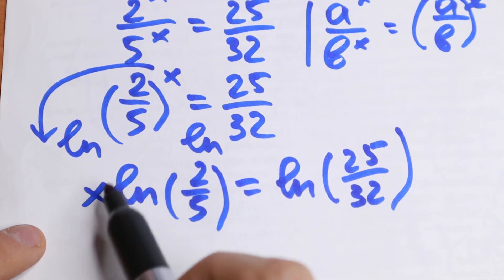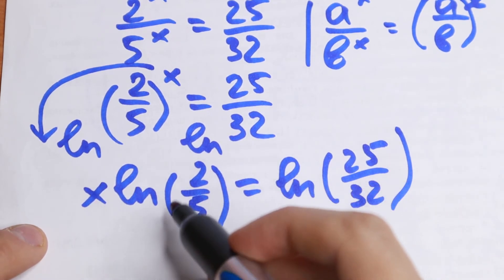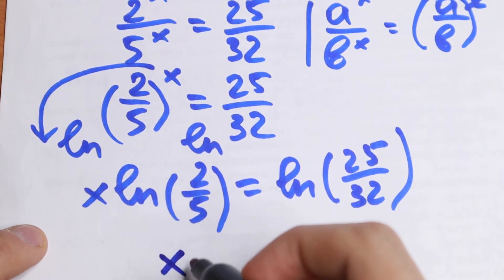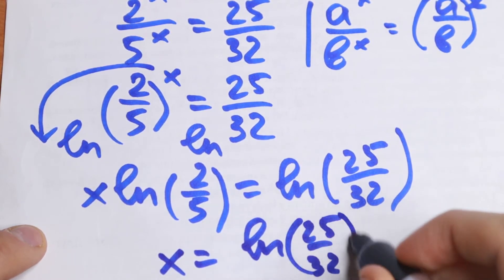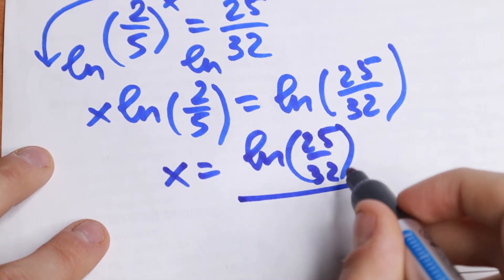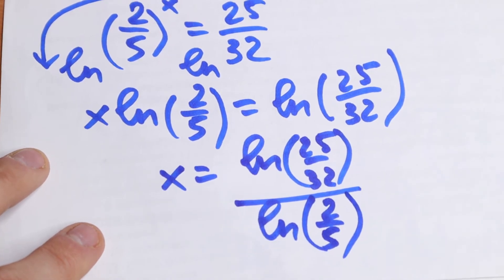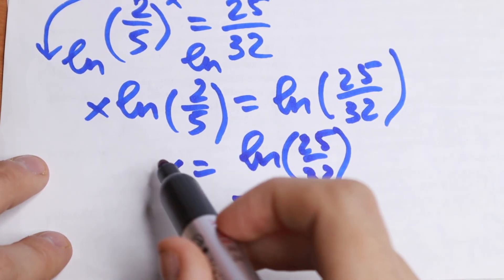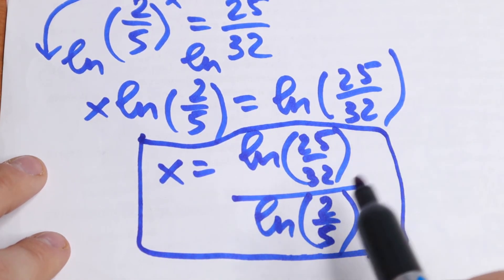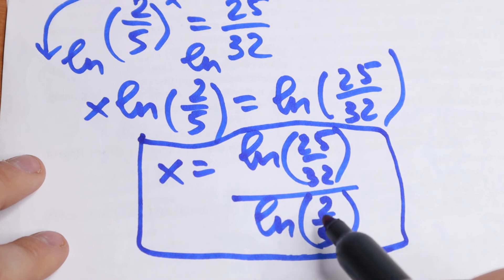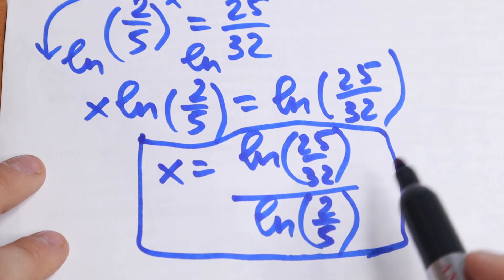For the last step, we divide both sides by the natural log of 2 over 5. So x equals the natural log of 25 over 32, divided by the natural log of 2 over 5. This is our answer. You can compute the numerical value using a calculator — it's not a whole number, but it is a definite value.